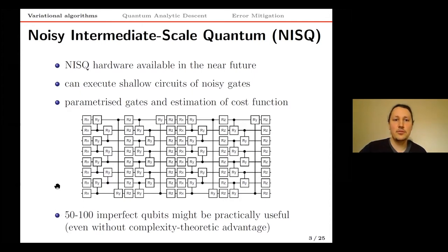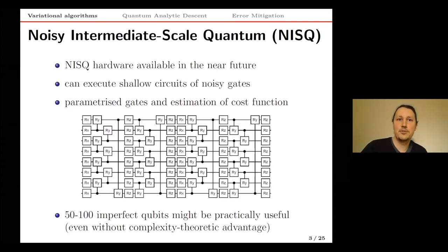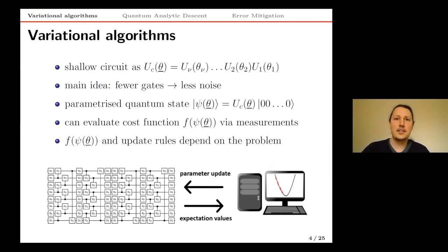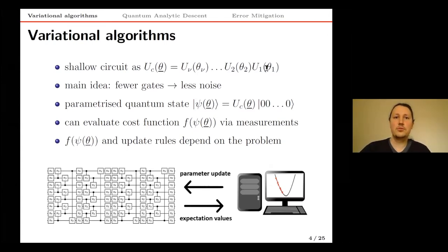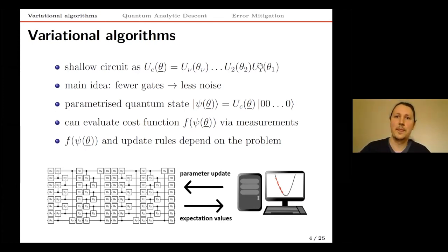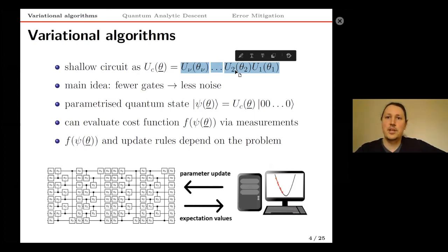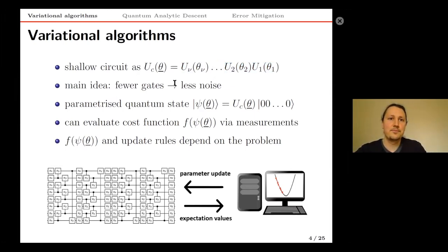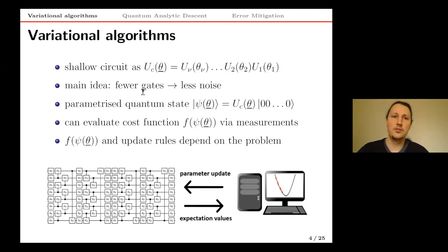It has been shown that even 50 or 100 imperfect noisy qubits might be very useful for solving practical problems. The idea is that we have parametrized gates, build a circuit out of them — circuits that can prepare complex quantum states not accessible to classical computers. With shallow circuits we accumulate less noise and can still achieve practical value. At the end, we perform measurements and estimate some sort of cost function.